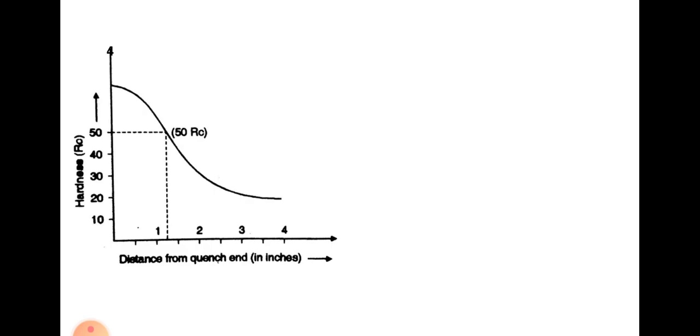And then we get a graph of hardness versus distance from quench end. And that graph is called as the hardenability curve. This is the graph of the hardenability curve. We show on the x-axis, this is the distance from quench end which is taken in inches.